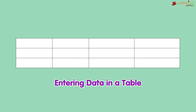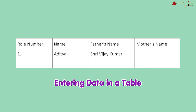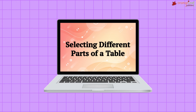To understand better, let's look at this example. We have four columns and three rows. In the first row: Roll Number, Name, Father's Name, Mother's Name. In the second row: 1, Aditya, Sri Vijaykumar, Srimati Kanti Devi. In the third row: 2, Subhaj, Srinaman Rao, Srimati Divya Kumari. In this way we can create a table and enter the data.